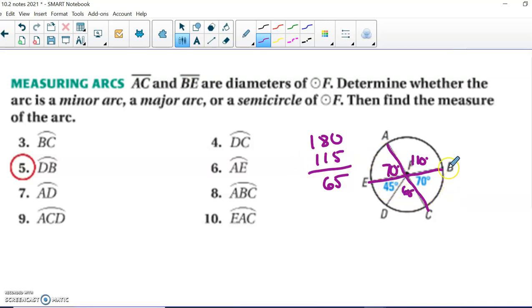We're looking for arc BC. It's two letters, so we know it's the minor arc. So that's going to be 70 degrees. We're looking for DC. That's 65.